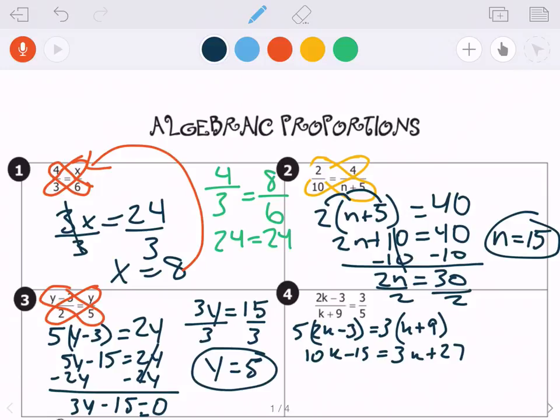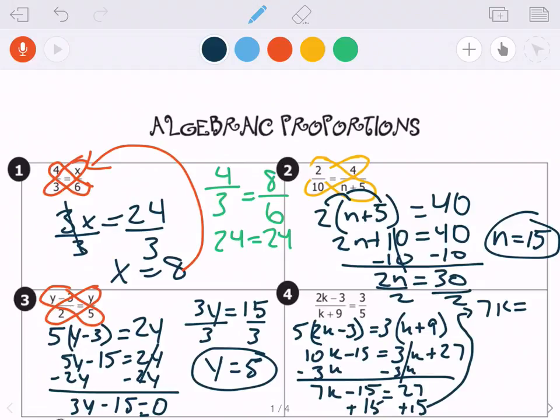So now I want to get my variables to the left, my constants to the right. So I'm going to subtract 3k on both sides. So those cancel. I'm left with 7k minus 15 equals 27. I need to get the minus 15 to the right side. So the opposite of minus 15 is plus 15. I'm going to go ahead and draw an arrow up here where I have some more room. So I'm left with 7k equals 27 plus 15 is 42. And then I need to divide both sides by 7 to get my final answer of k equals 6.